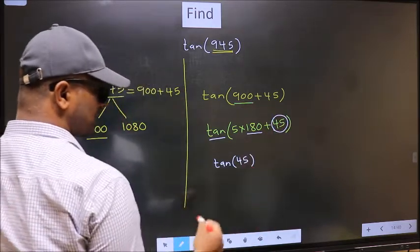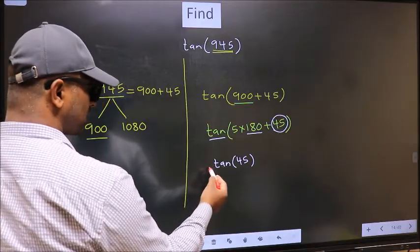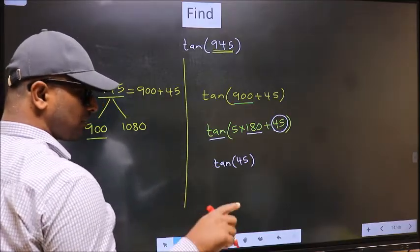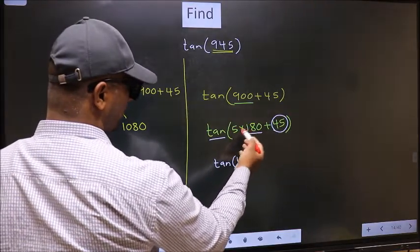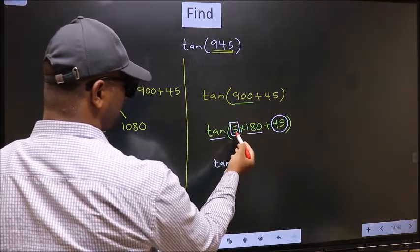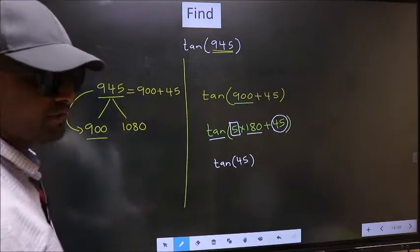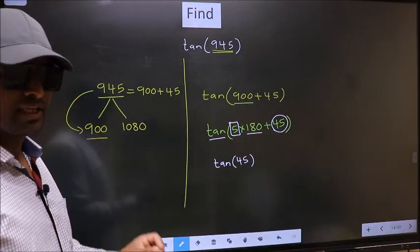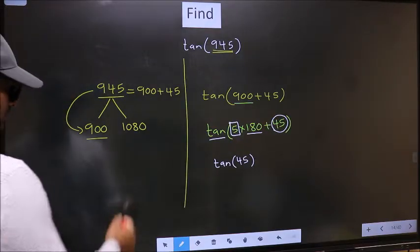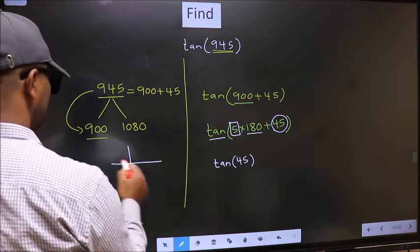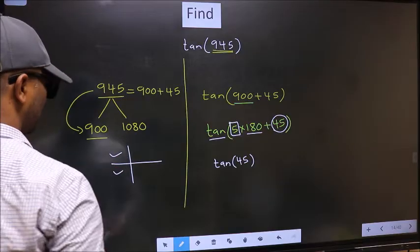Now the question is, will we get here plus or minus? To answer that, we should look at the number before 180. That is 5. And 5 is odd. And all the odd multiples of 180, they lie either in the second or in the third quadrant.